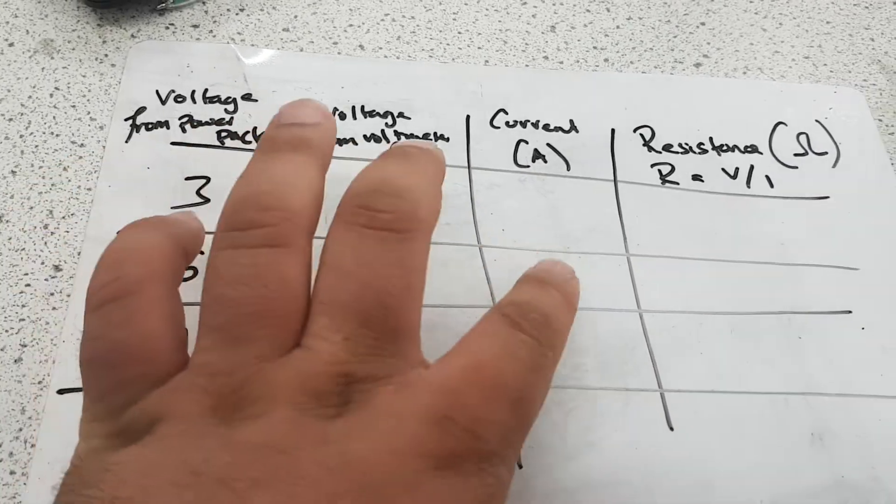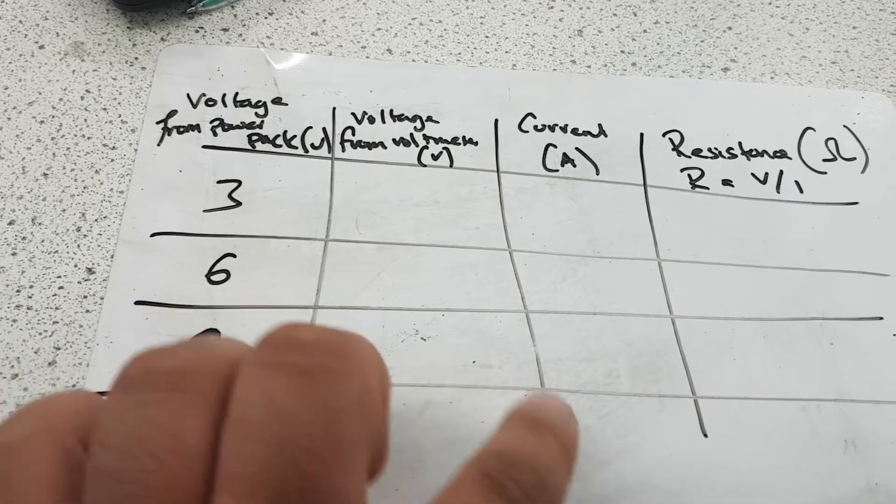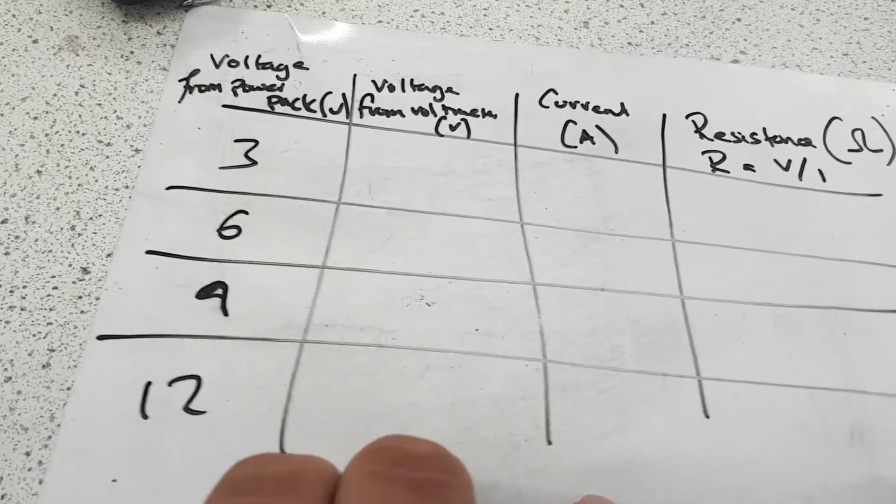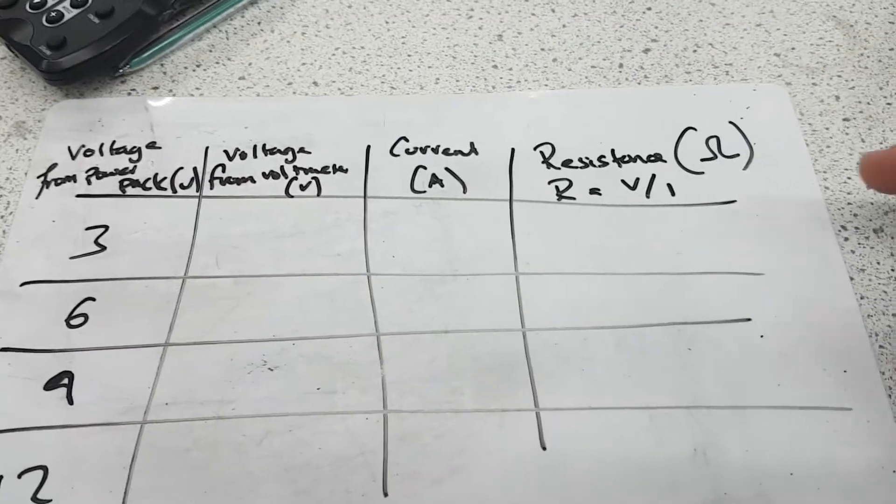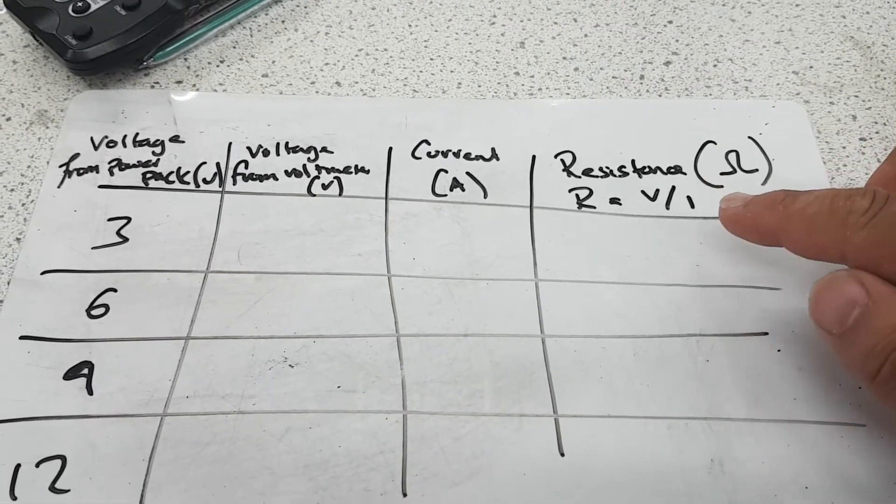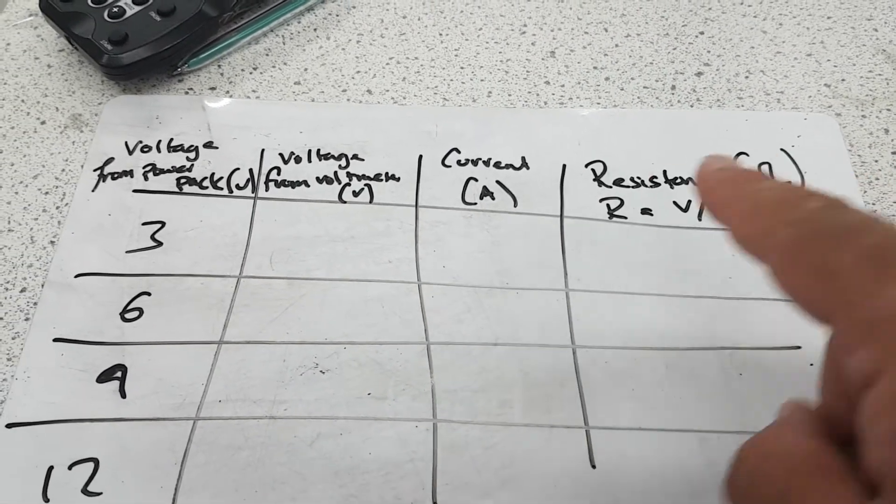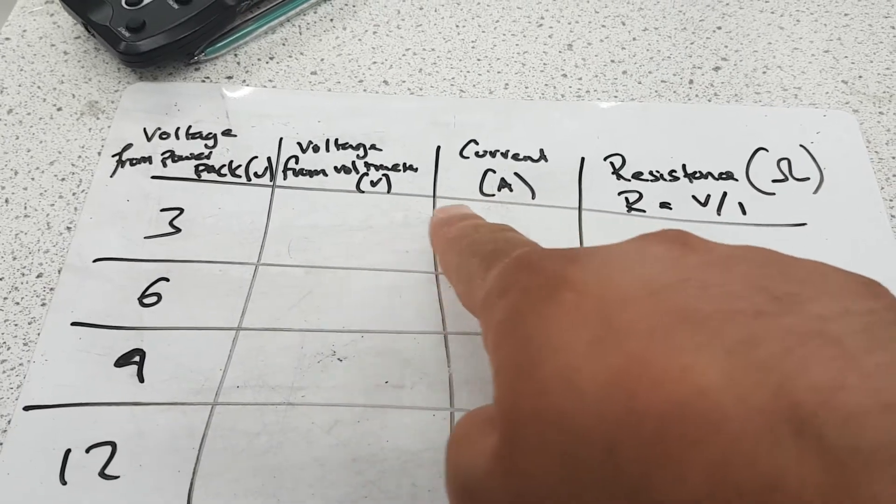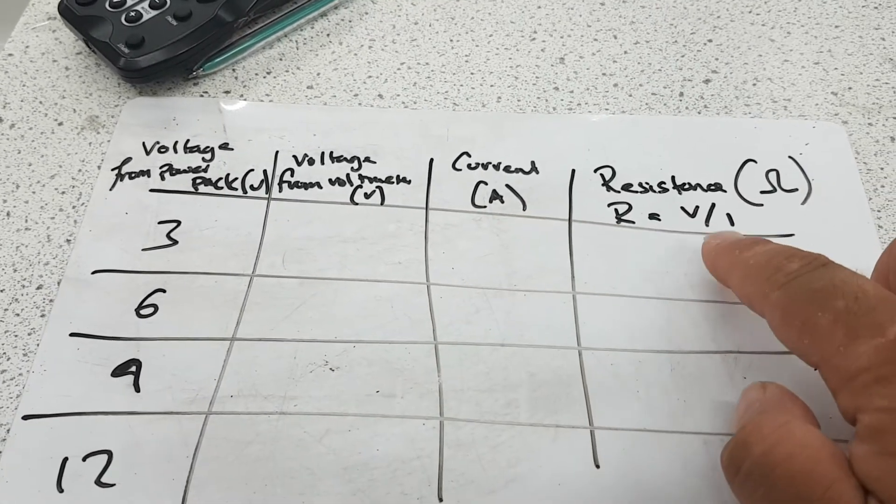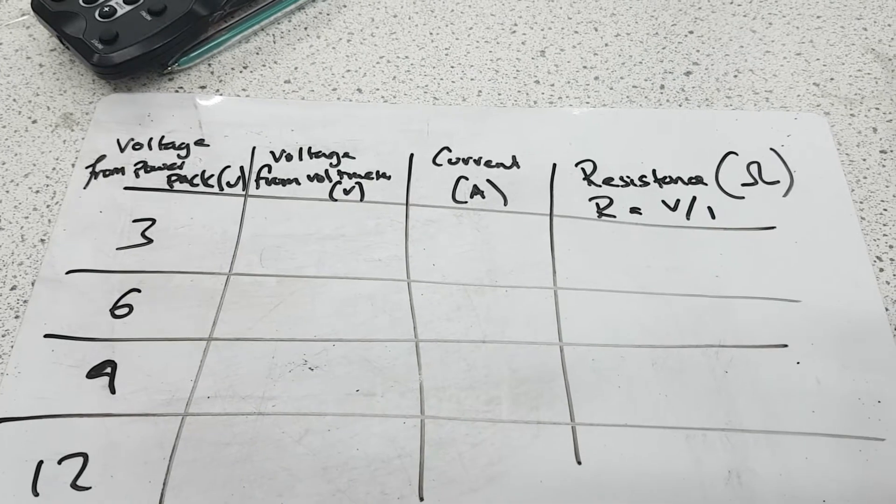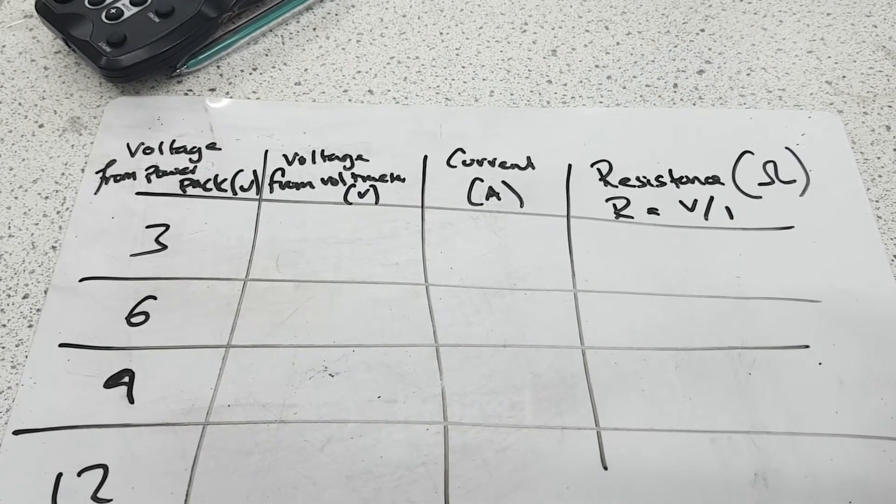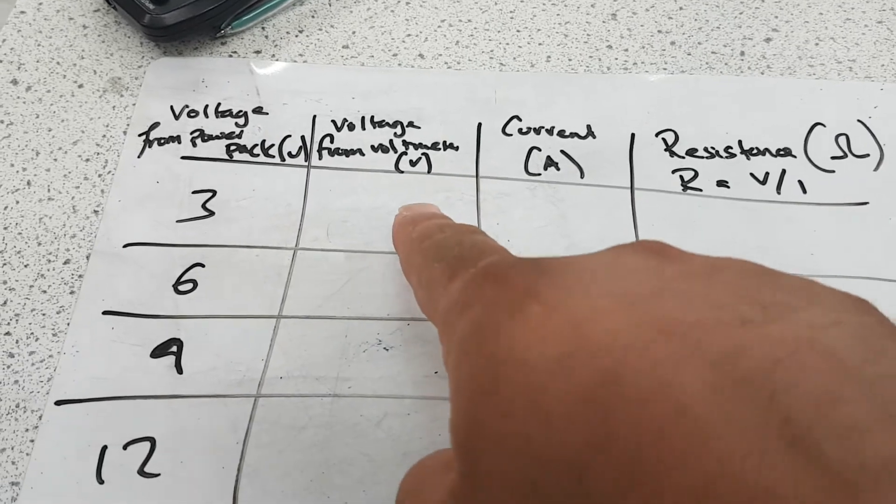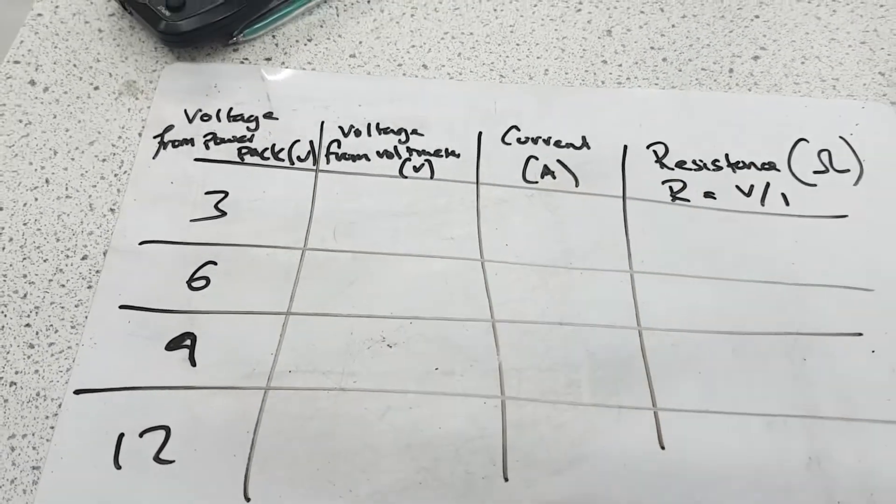9 volts, do the same. With 12 volts, do the same. Then what we're going to do is work out the resistance. So to get resistance, it's voltage divided by current, so it's going to be this divided by that. And you do that for each one to work out our resistance. Then what you're going to do finally is plot a graph of voltage against current, and you're going to see what pattern it gives you for the fixed resistor.